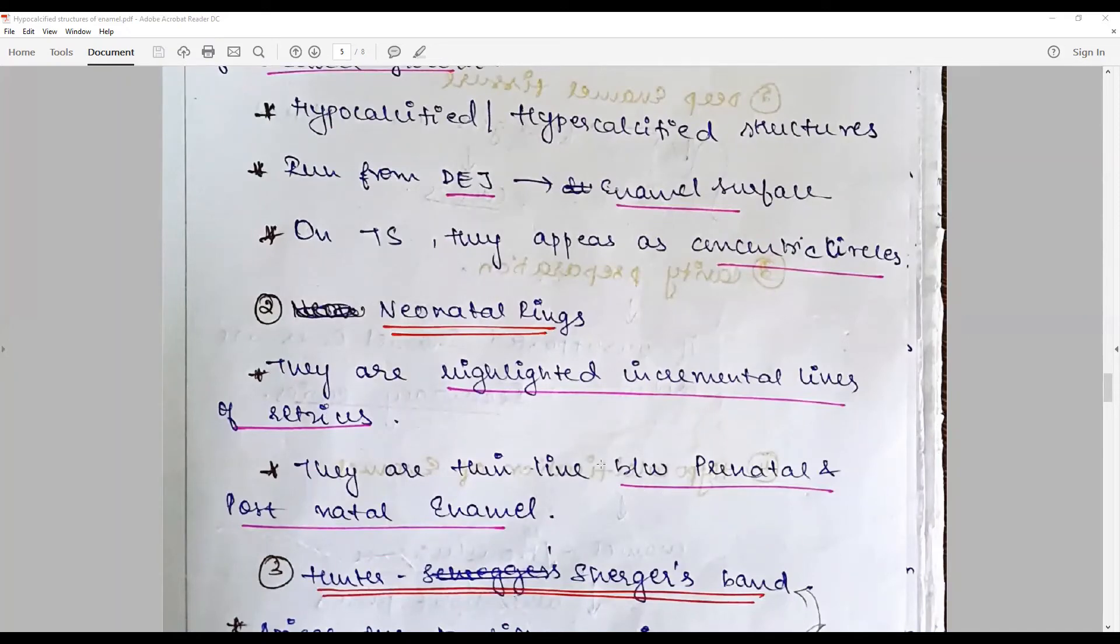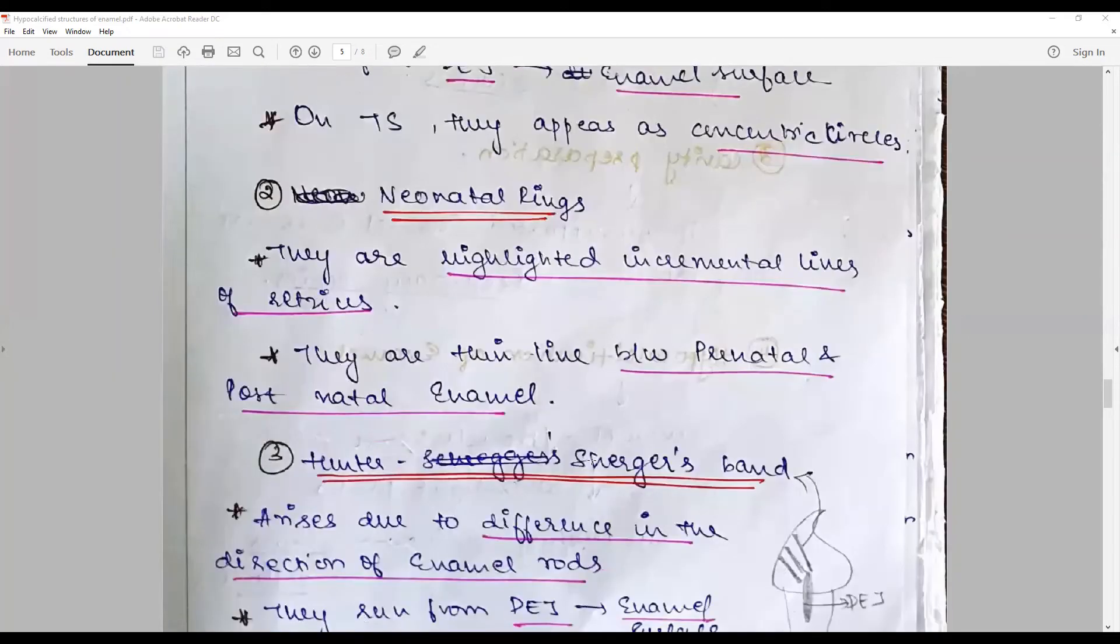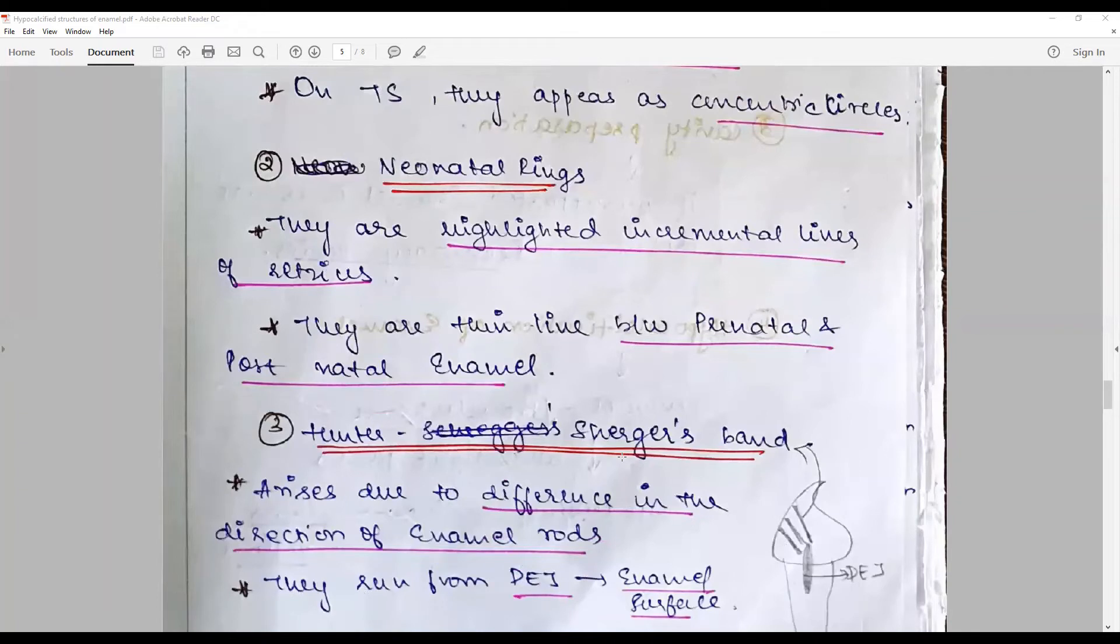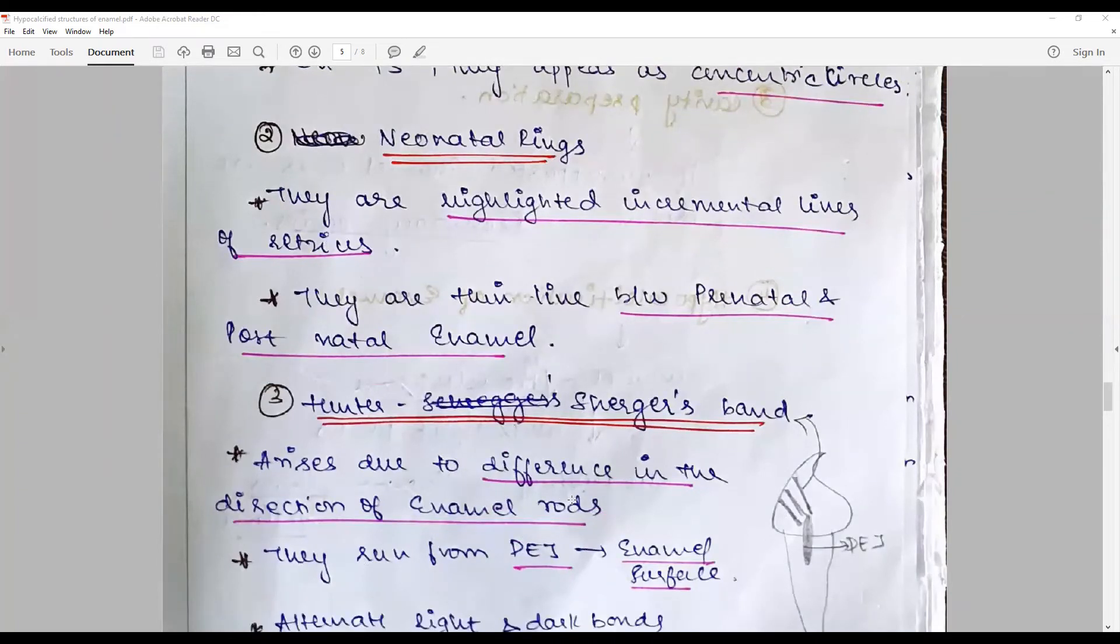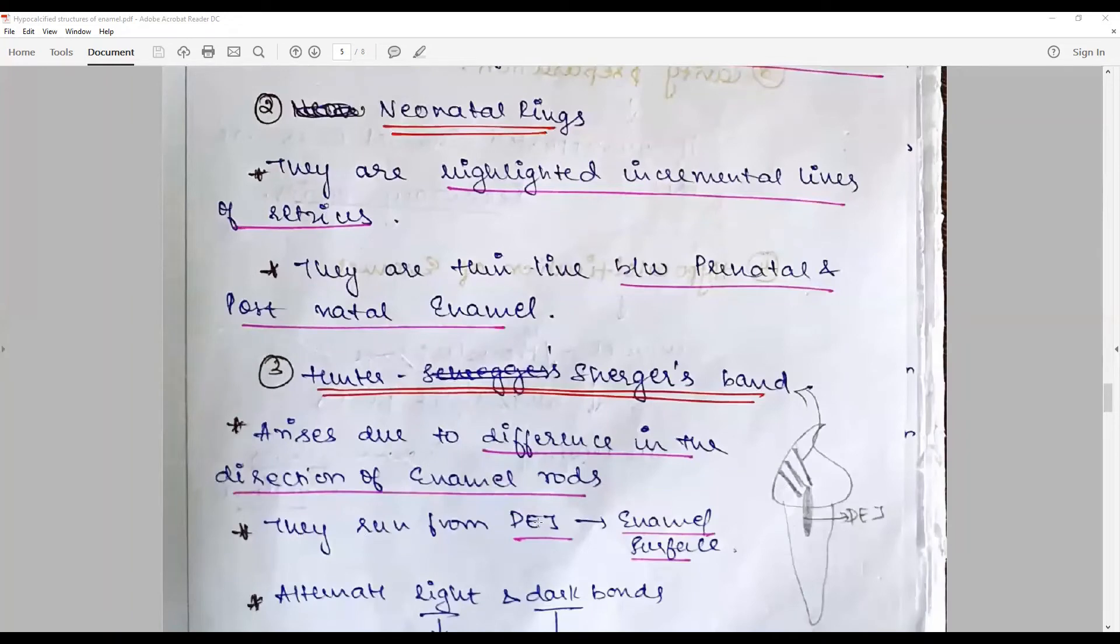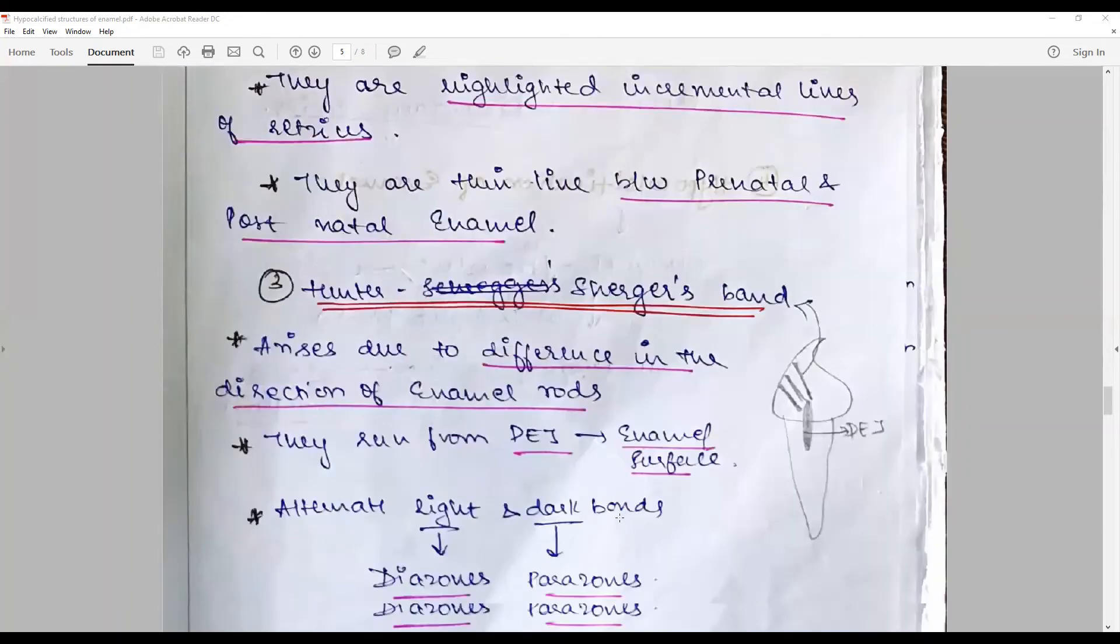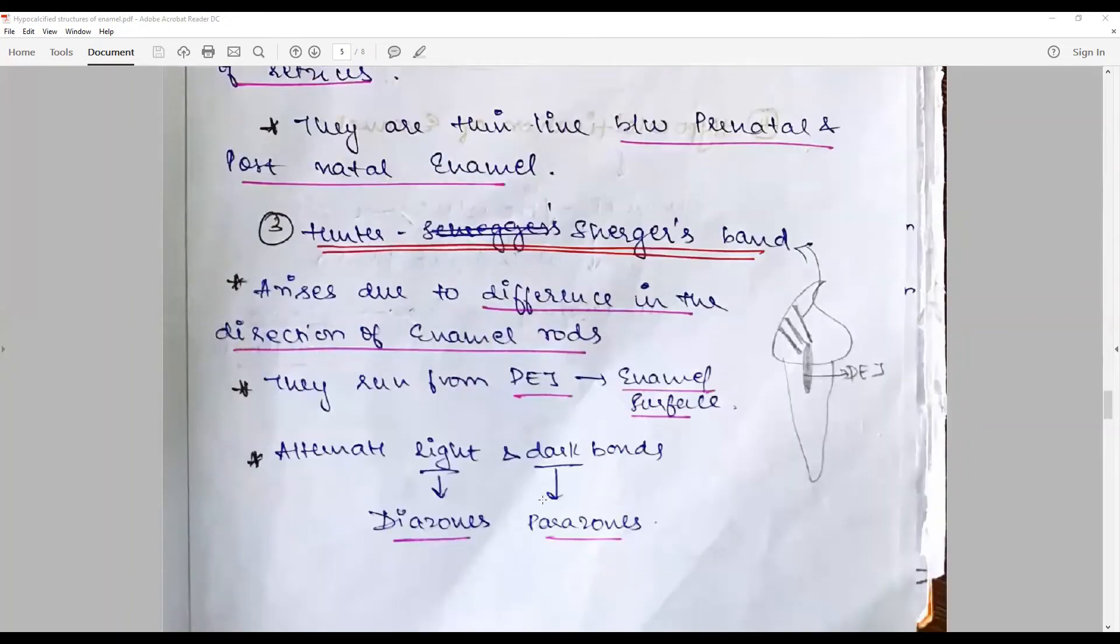Hunter-Schreger bands are optical illusions arising due to differences in the direction of enamel rods. They are also seen from DEJ to enamel surface and appear as light and dark bands. Light is called dia, dark is called para.